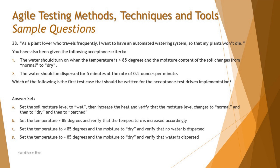The first acceptance criteria states that water should not turn on when it's hotter than 85 degrees, because watering plants in high heat may kill them. The second criteria is that the water should be dispersed for five minutes at the rate of 0.5 ounces per minute. The question asks: which of the following is the first test case that should be written for the acceptance test driven implementation?